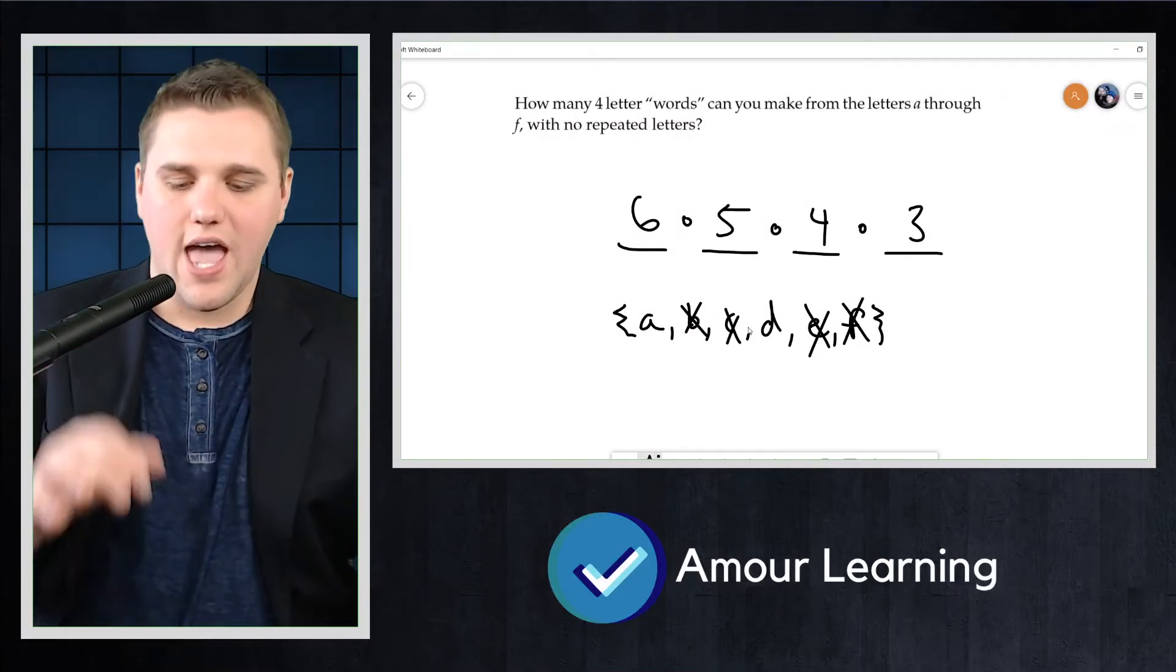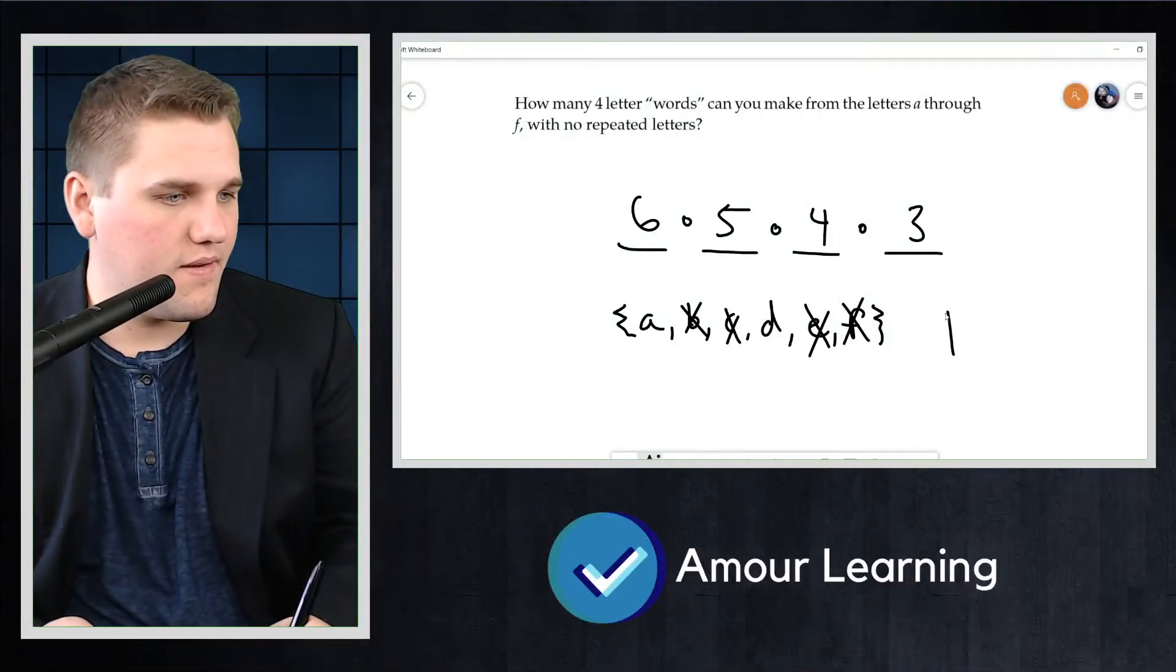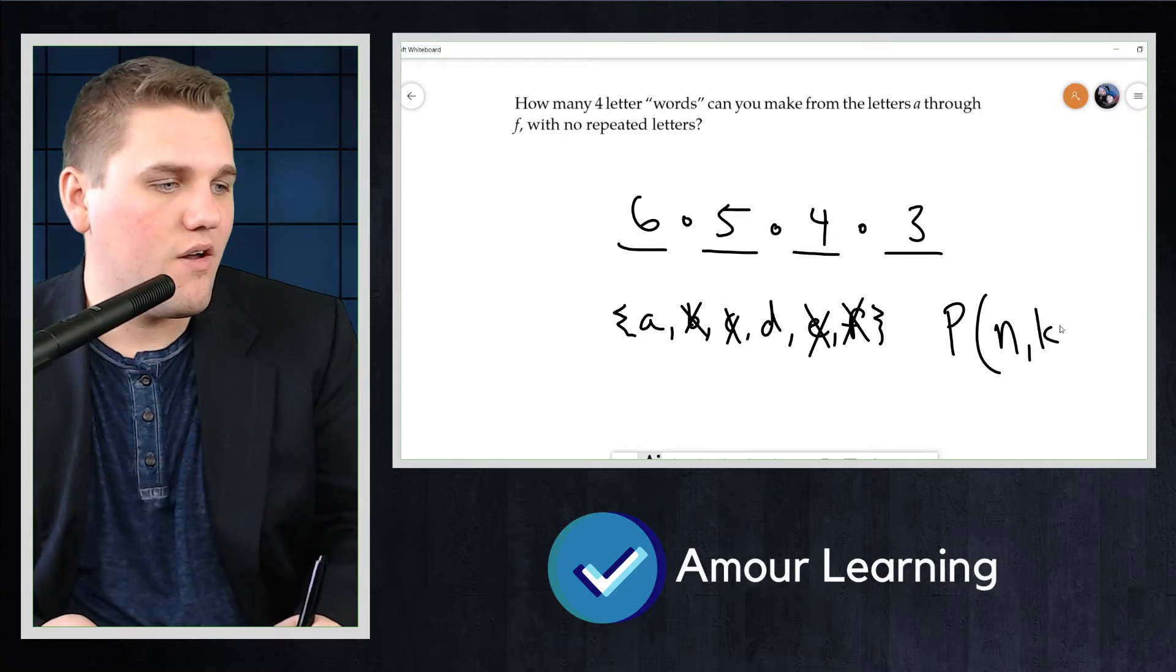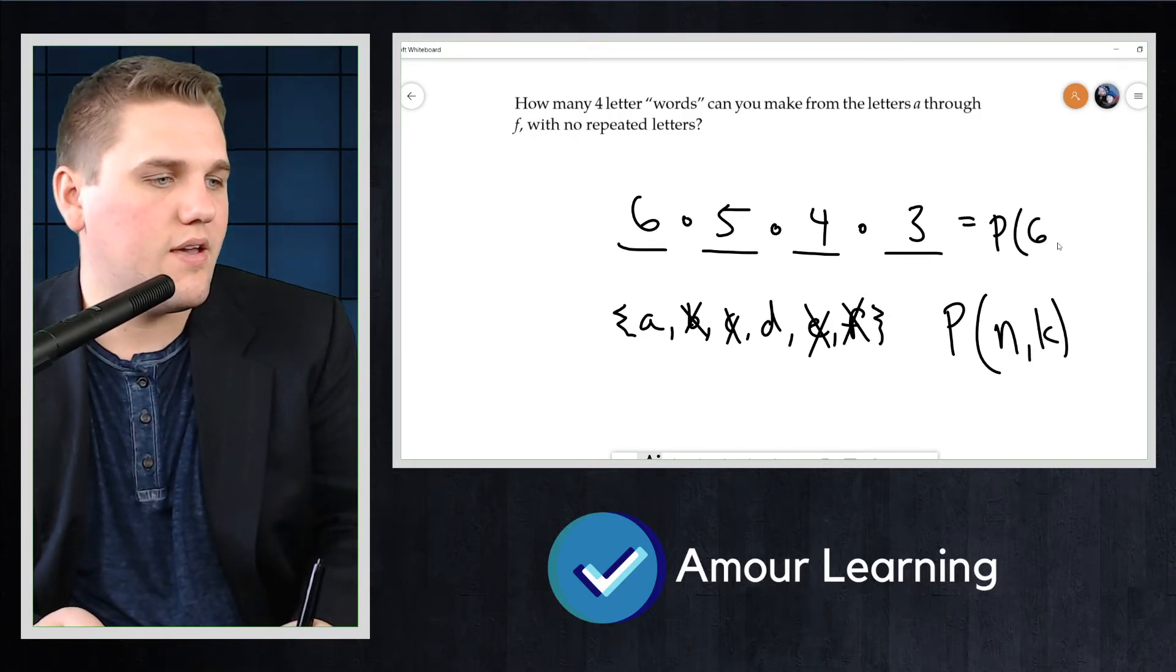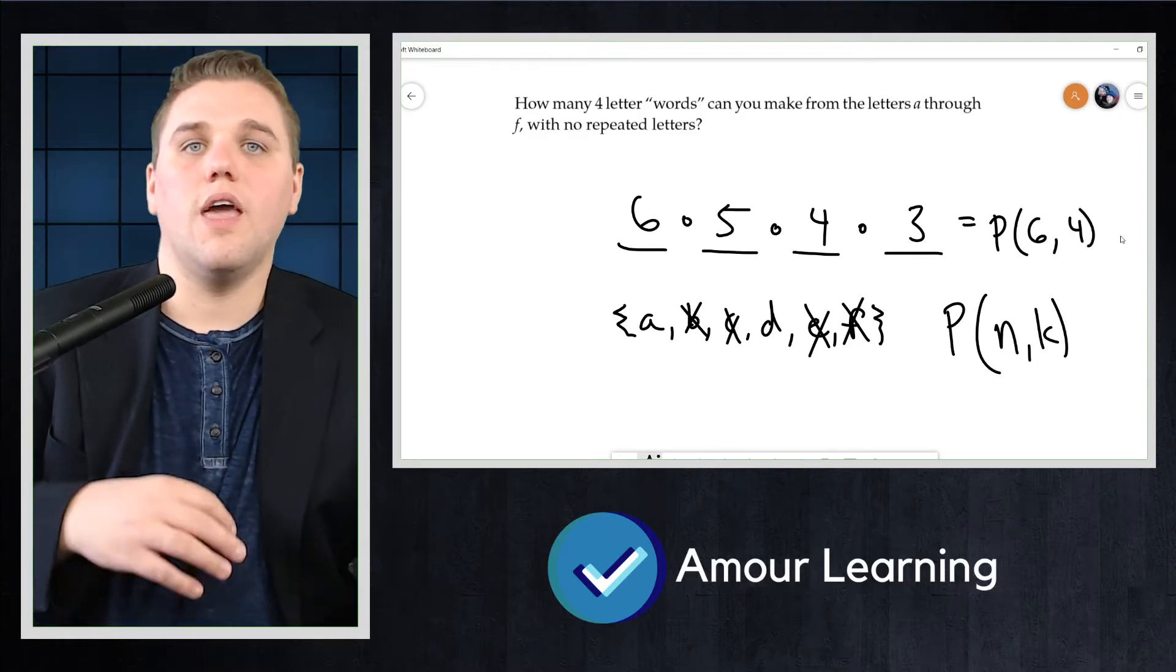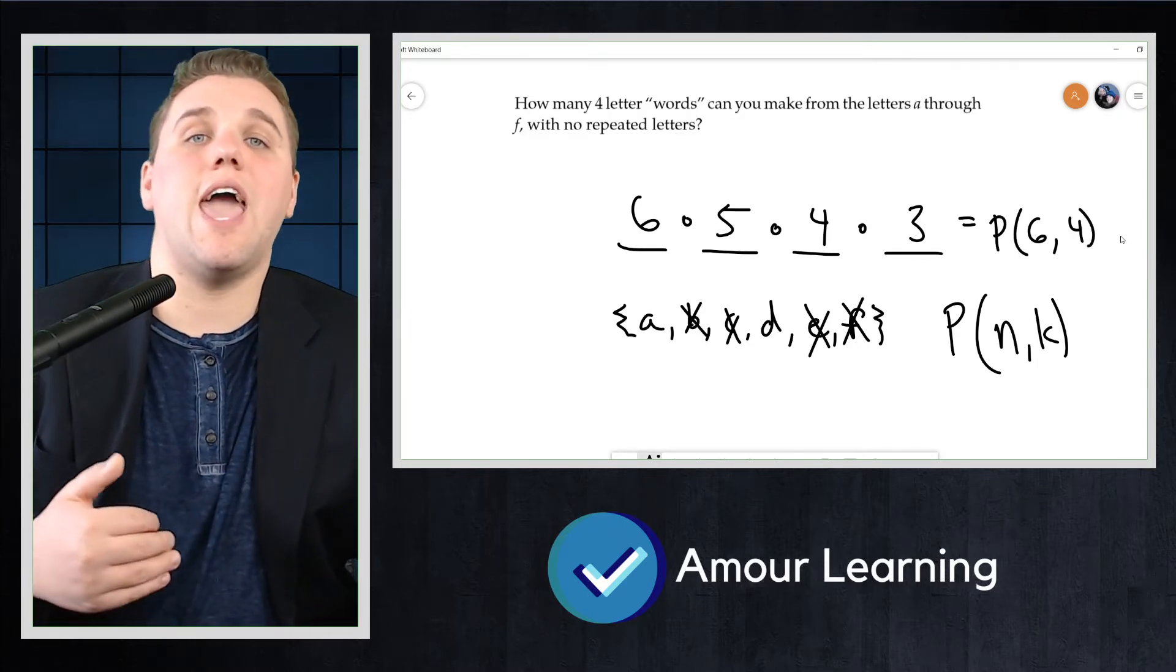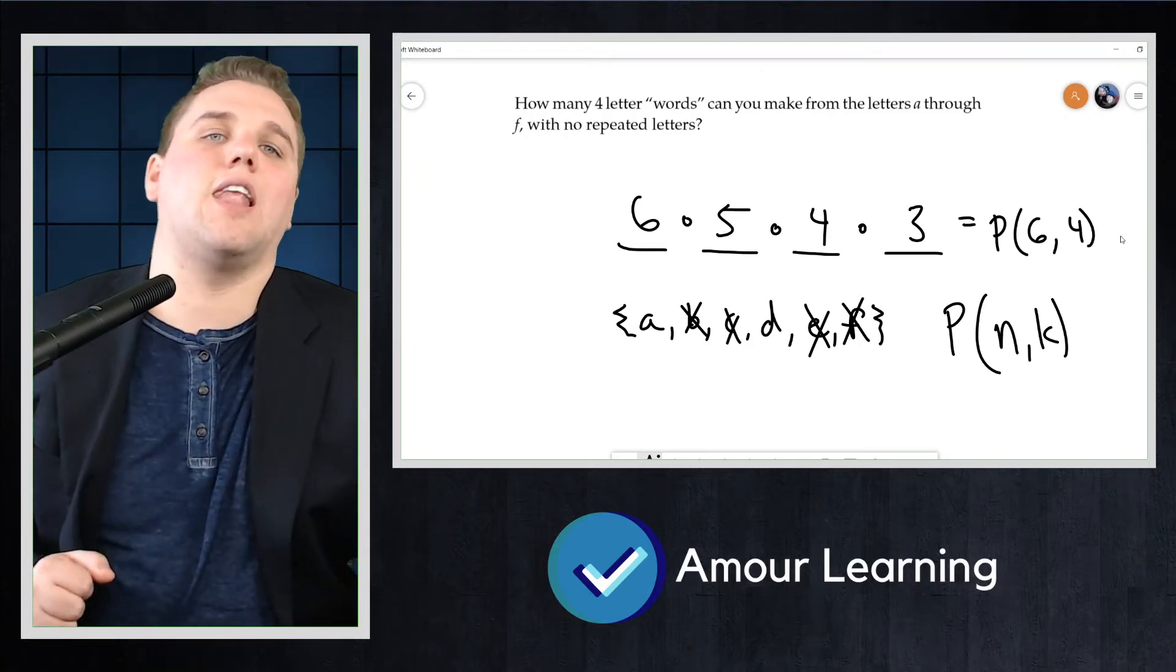In general, we can ask: how many permutations exist of K objects, choosing those objects from a larger collection of N objects? In the example we just did, K is four and N is six. We write this number as P(N,K), where in this example, this was P(6,4). And sometimes we call it a K permutation of N elements.